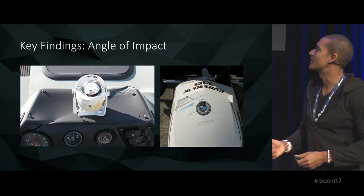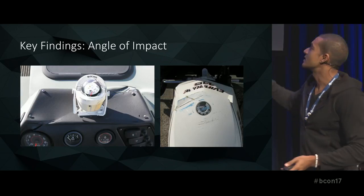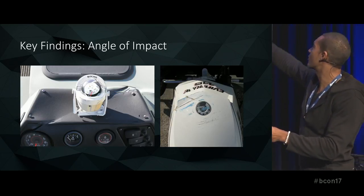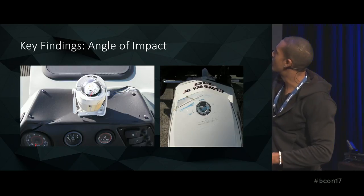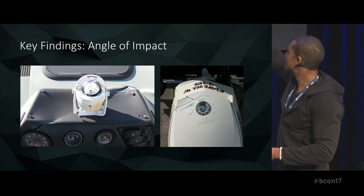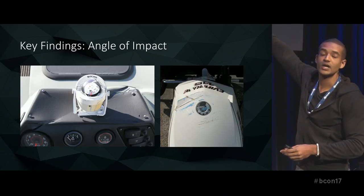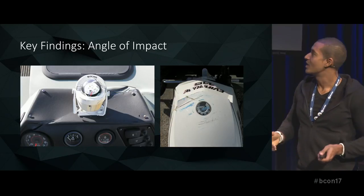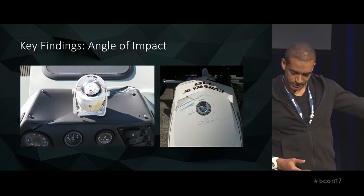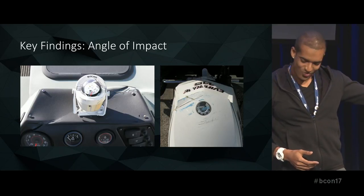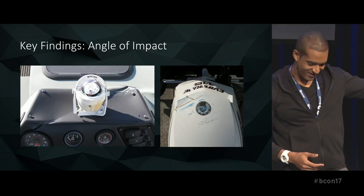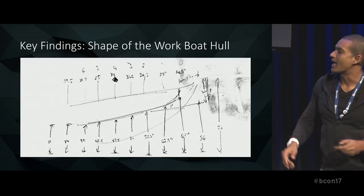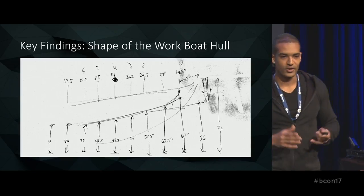The angle of impact was one of the only things we had to go from. On the left is the control console for the fishing boat and on the right is its engine. You can see the angle going across these matches, and also you can see the blue paint on the engine — so we know that the hull crossed there at some point. Another key finding was the shape of the work boat hull, sampled every couple of inches.